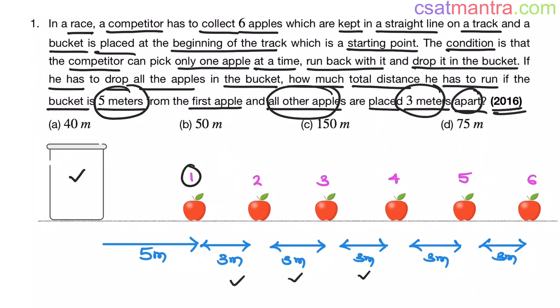And all other apples are 3 meters apart. See, 3 meters apart. Clear, right? We have 6 apples.